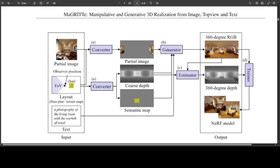And then in figure B, these ERP images and text are combined to generate a 360-degree RGB. Then in C, the generated RGB is combined with the coarse depth to estimate the fine depth. And finally in D at the very right, a NeRF model is trained from 360-degree RGBD.